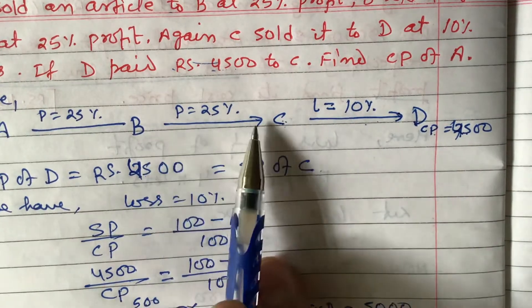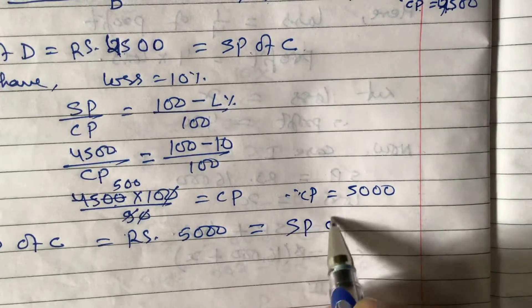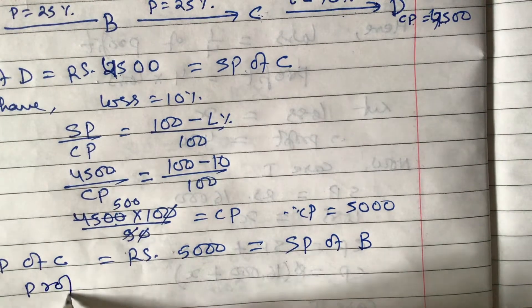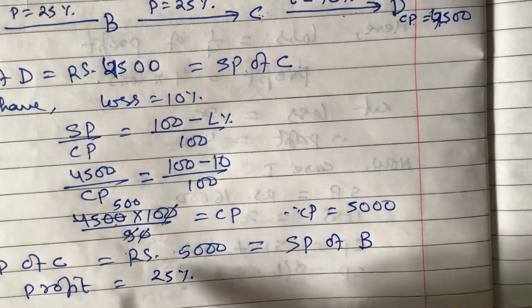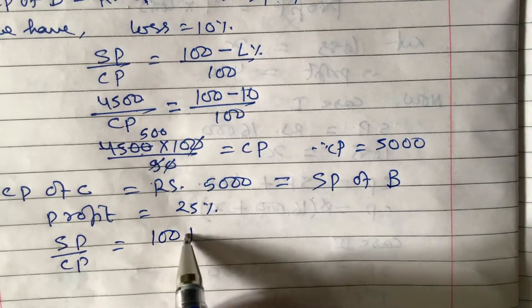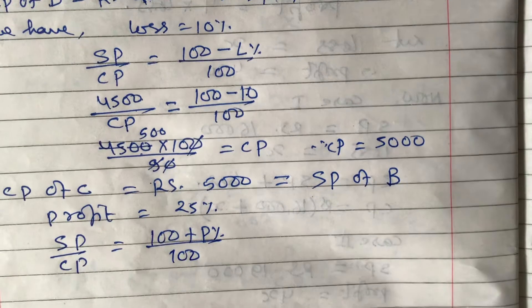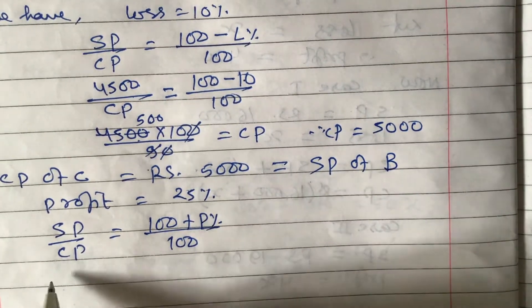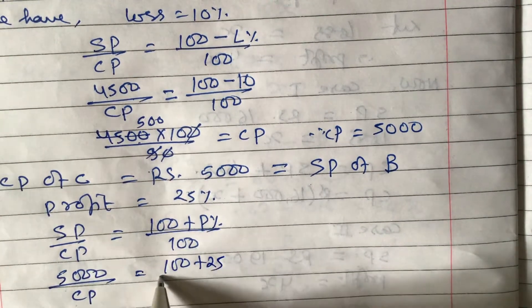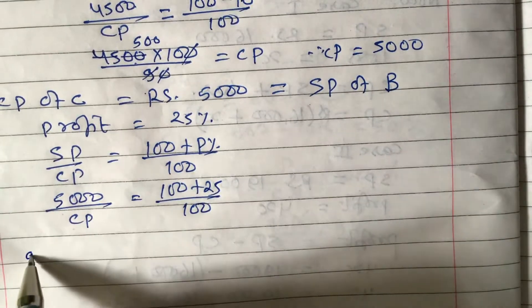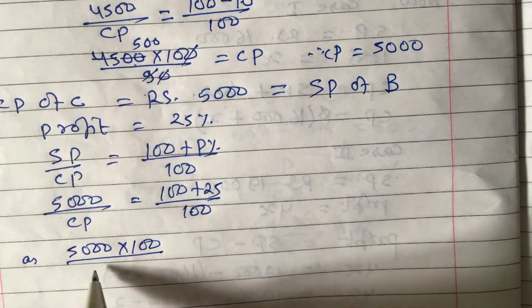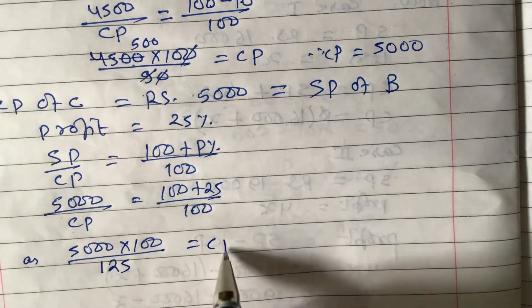The cost price of C equals the selling price of B, since B sold to C. SP of B = ₹5,000. B made 25% profit, so we use: SP / CP = (100 + profit%) / 100. That gives: 5000 / CP of B = 125 / 100. Cross-multiplying: CP of B = (5000 × 100) / 125.